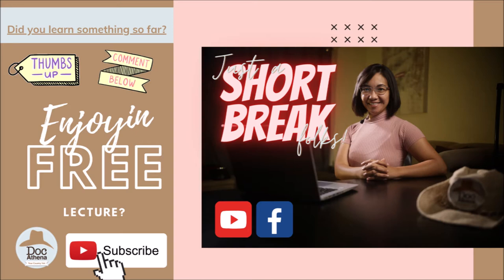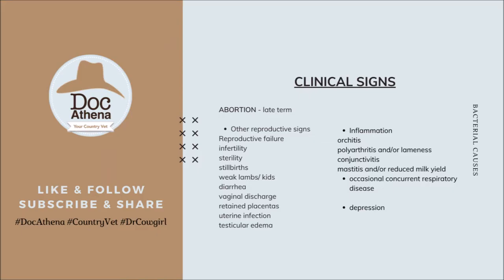Now, back to work. We discussed the different bacterial causes of abortion. What are the clinical signs? They are almost the same. Bacterial causes typically result in late-term abortion — unfortunately when we are already expecting the animal to go into labor. Reproductive signs include reproductive failure in your herd: infertility, sterility, stillbirths, or if the kid survives, it could be weak.